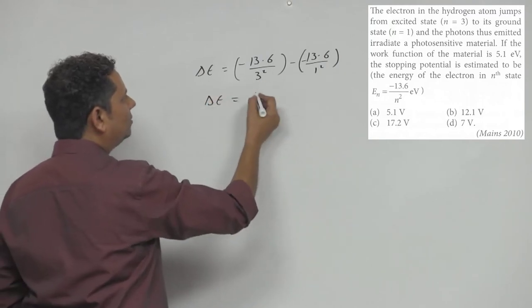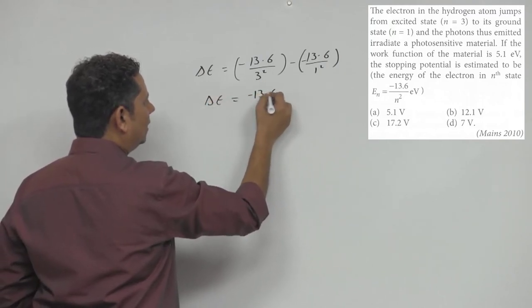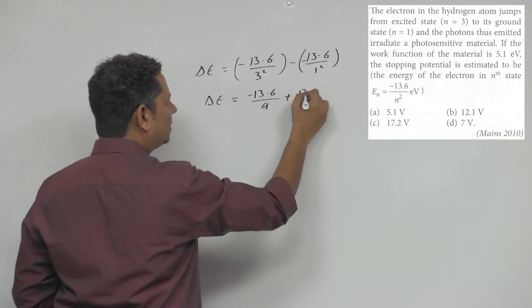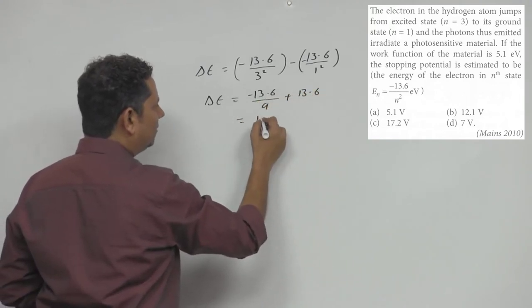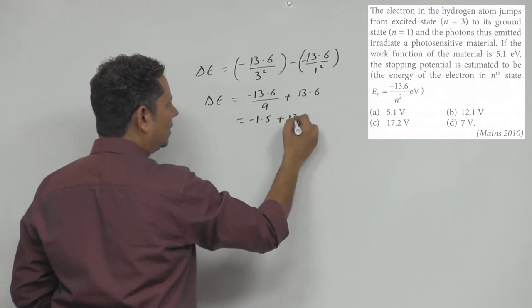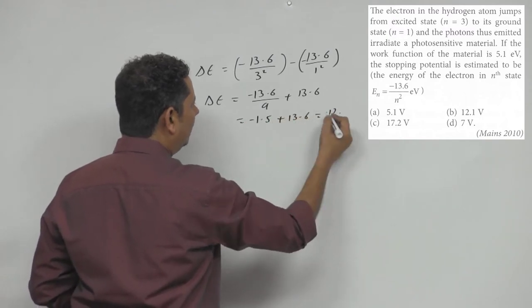So delta E, the energy released, is equal to minus 13.6 divided by 9 plus 13.6, which equals minus 1.5 plus 13.6.